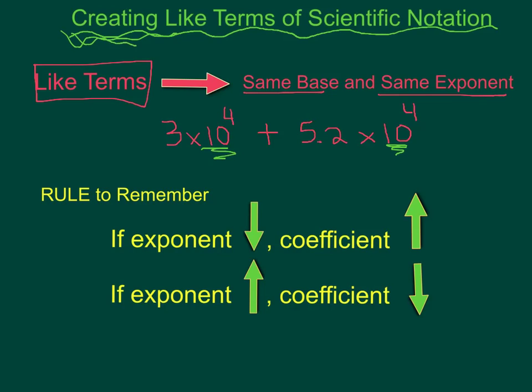Which is what the first part of our lesson is all about — creating these. So the rule to remember, because we're going to be changing the form of our numbers: when we change our numbers in scientific notation, you need to remember that if you decrease your exponent, you're going to increase your coefficient. And the opposite — if you increase your exponent, you're going to decrease your coefficient by moving the decimal.